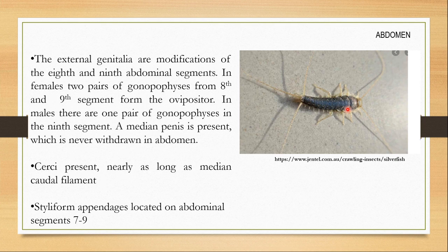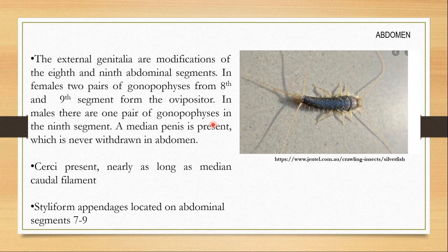The external genitalia are modifications of the 8th and 9th abdominal segments. In females, both segments bear a pair of gonapophyses, and these four gonapophyses together form the ovipositor. In males, there is just one pair of gonapophyses in the 9th segment and a median penis which is never withdrawn into the abdomen. The cerci are nearly as long as the median caudal filament.